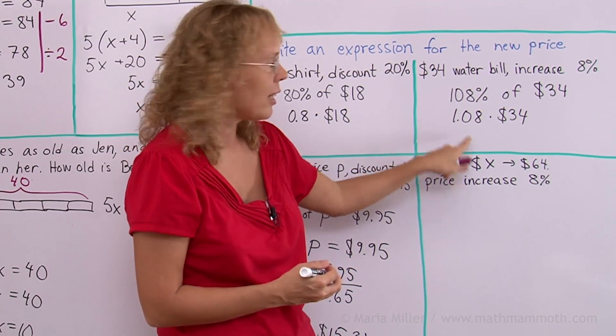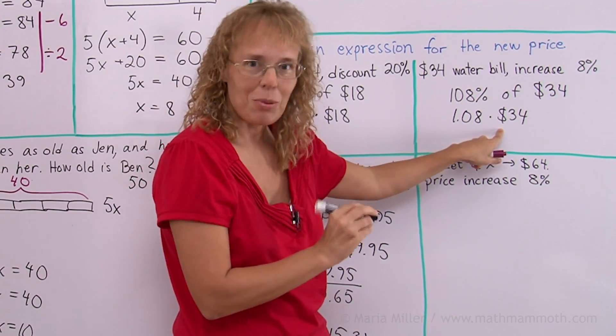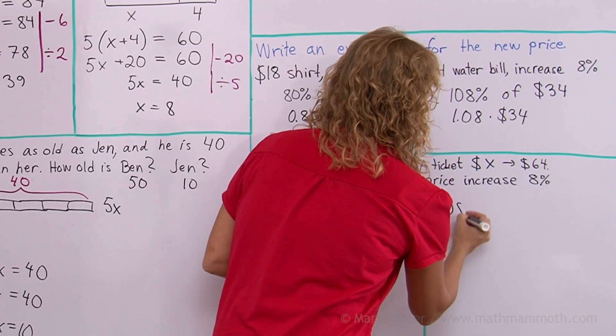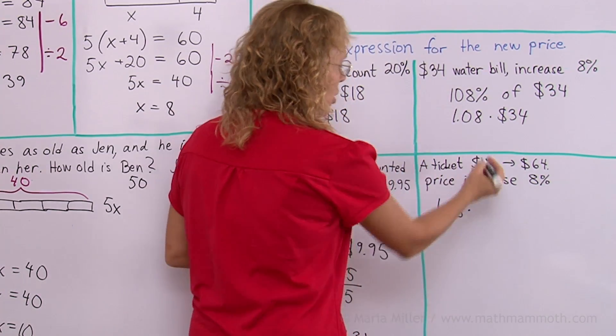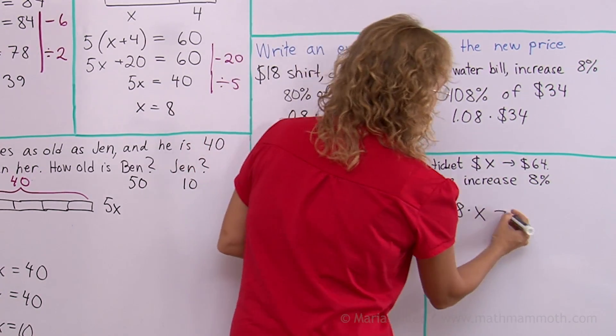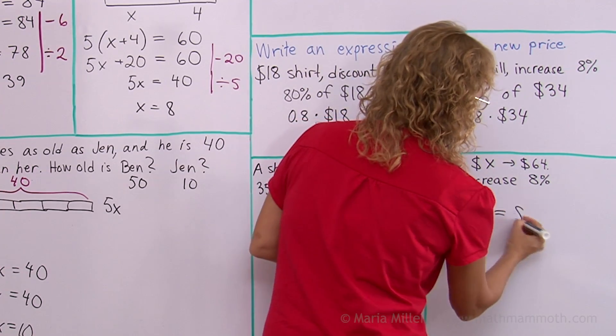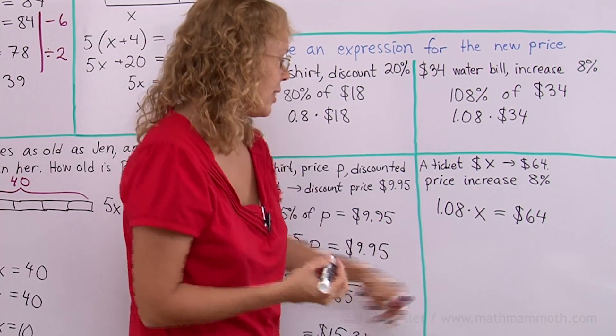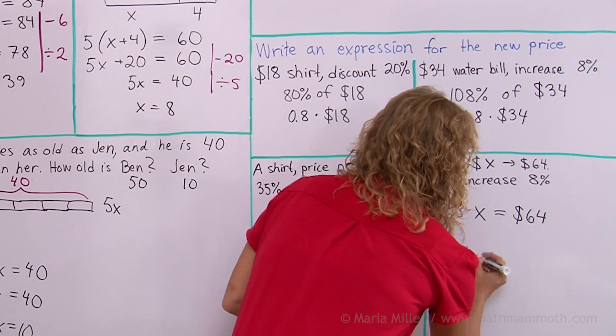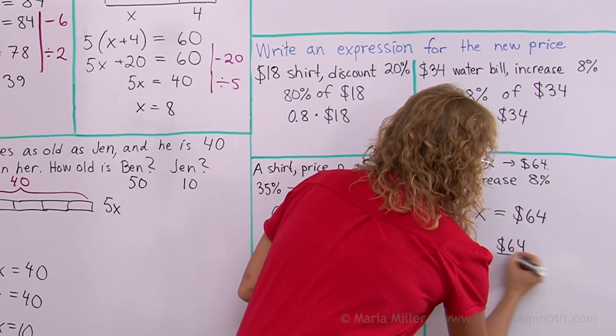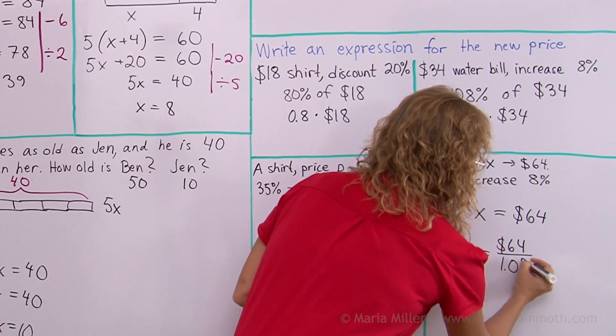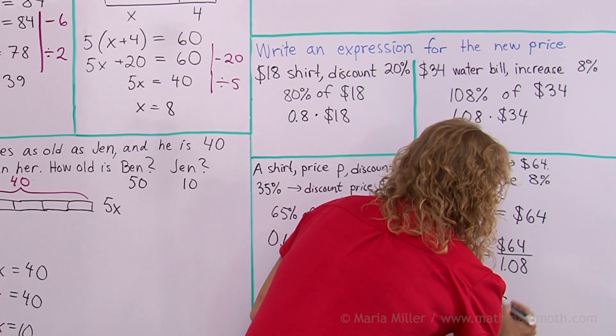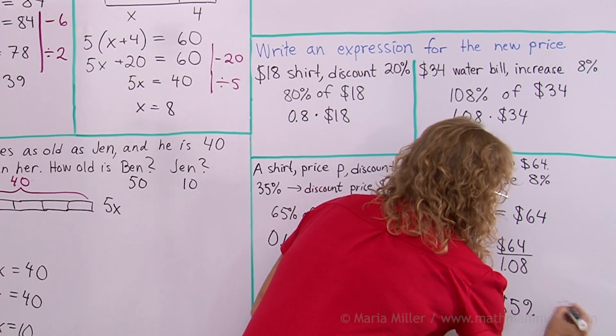So I can use exactly this expression here. I take 1.08 times the original price. And that gives me the new price. 1.08 times the original price. But we don't know it. So that's the X. Then that gives us the new price. 64. And to solve it, divide both sides by this decimal. 1.08. So X equals $64 divided by 1.08. And then that gives you $59.26.